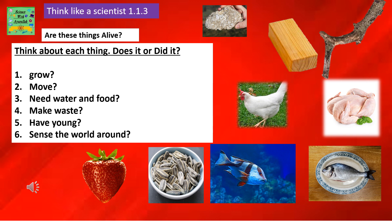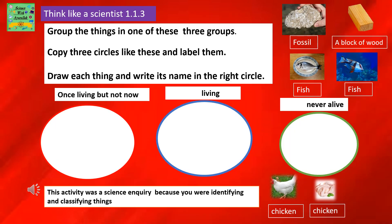Does it or did it grow? Move? Need water and food? Make waste? Have young? Sense the world around them? Group these things in one of these three groups. Copy three circles like these and label them. Draw each thing and write its name in the right circle.